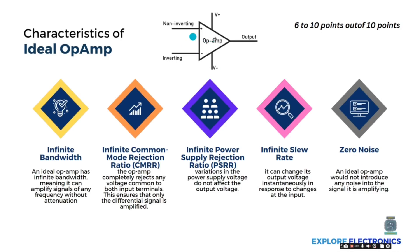The last characteristic is zero noise. An ideal op-amp will not introduce any noise into the signal while it is amplifying. So these are the 10 key points explaining the ideal op-amp characteristics.